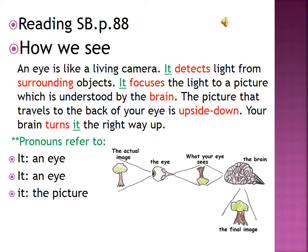Reading student book page 88: 'How We See.' An eye is like a living camera — العين مثل الكاميرا الحية. It detects light from surrounding objects — إنها تكتشف الضوء الصادر من الأجسام المحيطة. It focuses the light to a picture which is understood by the brain. The picture that travels to the back of your eye is upside down — الصورة التي تنتقل إلى الجزء الخلفي من عينك تكون مقلوبة. Your brain turns it the right way up — يقوم العقل بتحويلها إلى الطريقة الصحيحة أي إلى الأعلى.